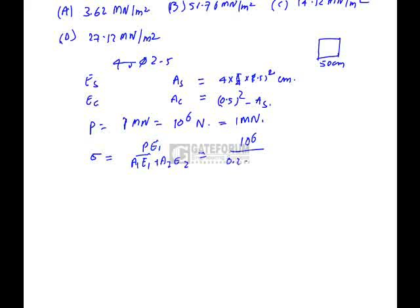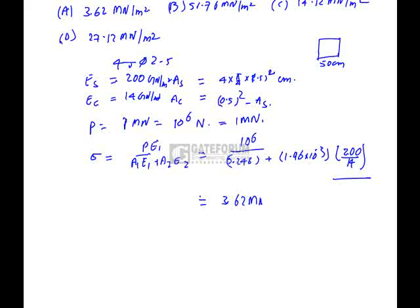A1 is area of concrete equals 0.248 plus 1.96 into 10 to the power of minus 3 into 200 divided by 14. Young's modulus of steel is 214 GN per square meter. We have taken common of E1, Young's modulus of concrete. If you calculate this, you will get 3.62 MN per square meter. Option A is correct, 3.62 MN per square meter.